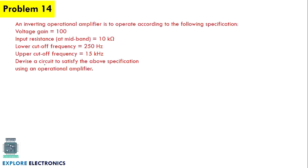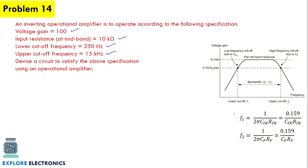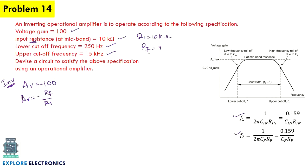We need to devise a circuit where the lower cutoff frequency, upper cutoff frequency, input resistance, and voltage gain all meet the given specifications. For an inverting amplifier, Av equals minus Rf divided by R1. The gain is given as 100, so with the negative sign from inversion, we get minus 100.